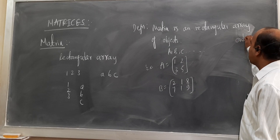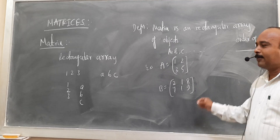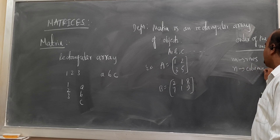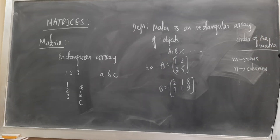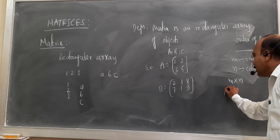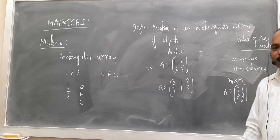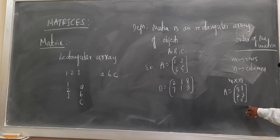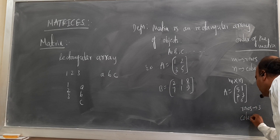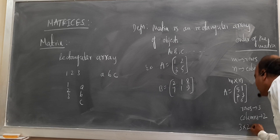Now we discuss the order of a matrix. A matrix having m rows and n columns is called a matrix of order m by n. We read it as an 'm by n matrix.' For example, A equal to [5, 1; 2, 3; 1, 6] — here we observe 3 rows and 2 columns. Therefore rows are 3 and columns are 2, and it is called the matrix of order 3 by 2.